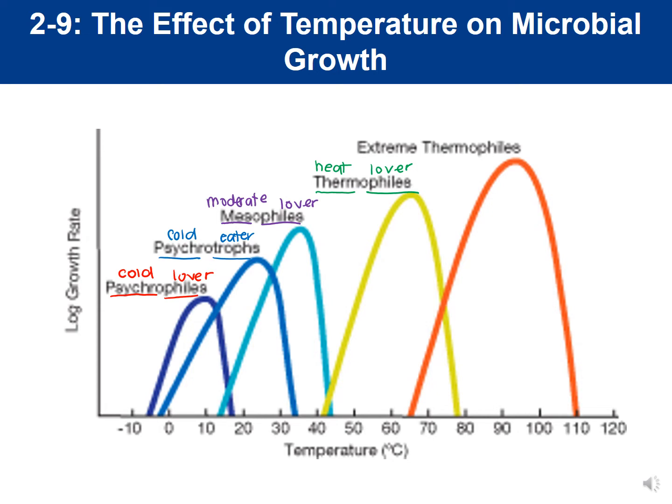Extreme thermophiles, as the name suggests, are extreme heat lovers. They grow minimally at about 65°C, maximally up to about 110°C, and optimally between about 90–100°C — close to boiling.